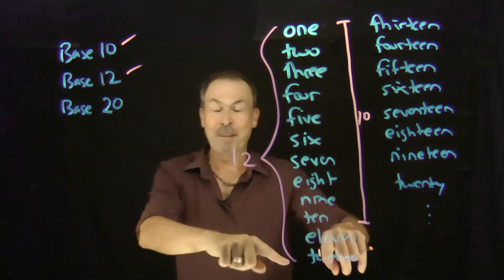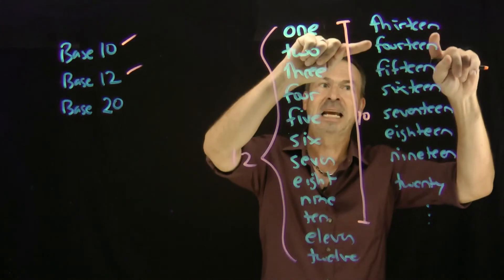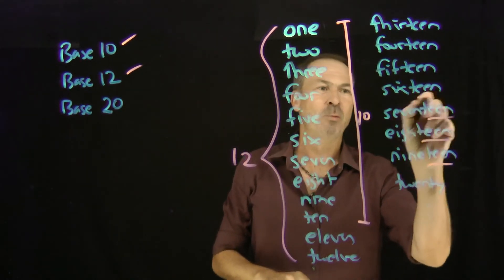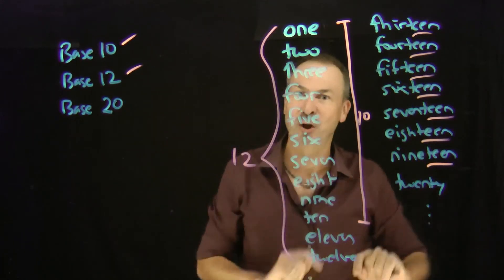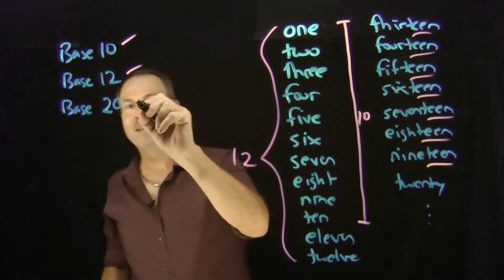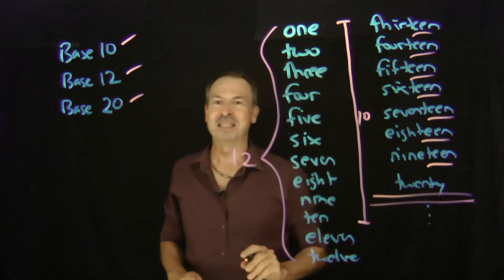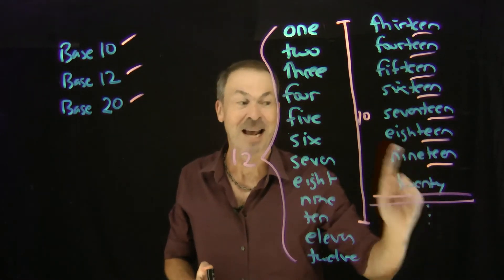And then, once we get past 12, we've got this pattern for getting up to 20. We say 13, 14, 15, 16, 17, 18, 19, and then 20. We follow this pattern of using teen for the 10-ness, getting ourselves up to 20. Great! So we have a pattern that gets up to 20. But then it stops. Then we don't feel things are special anymore. We just use a new pattern, a brand new pattern, and stick with it.